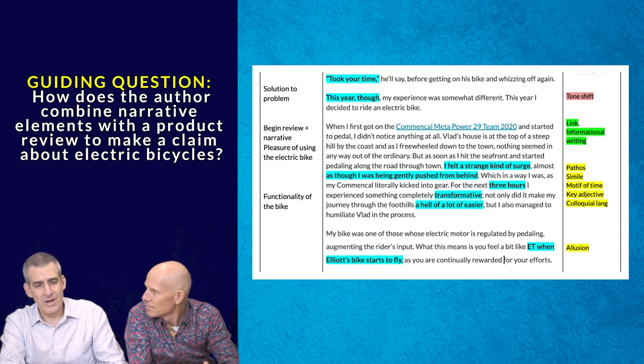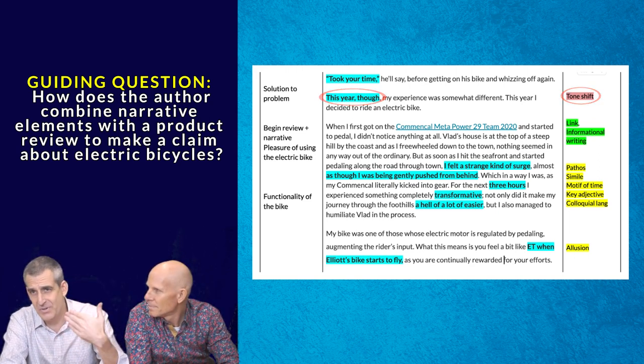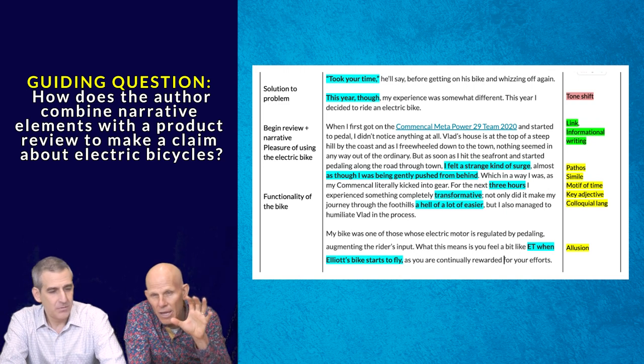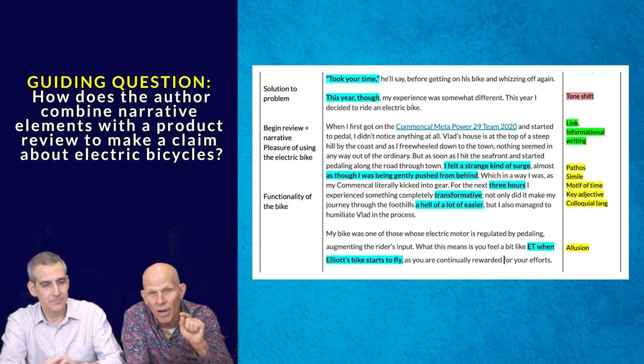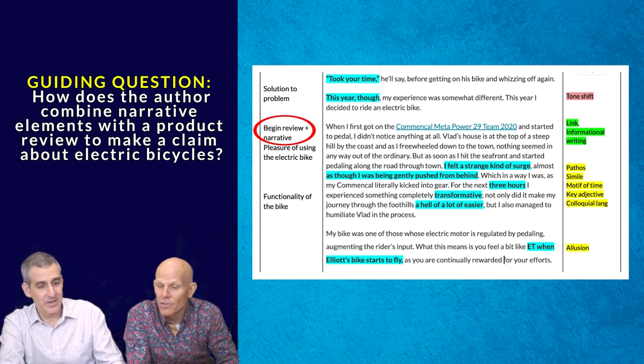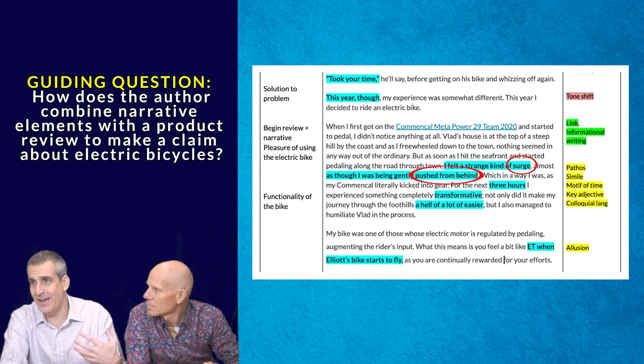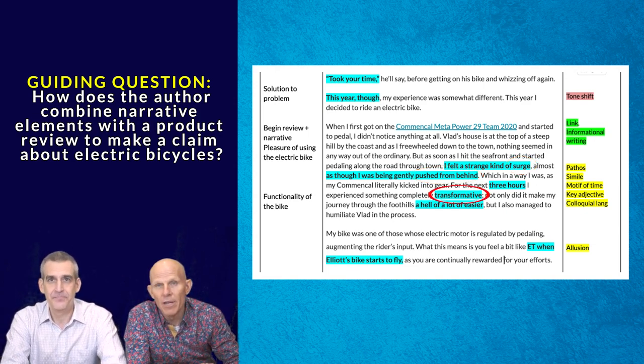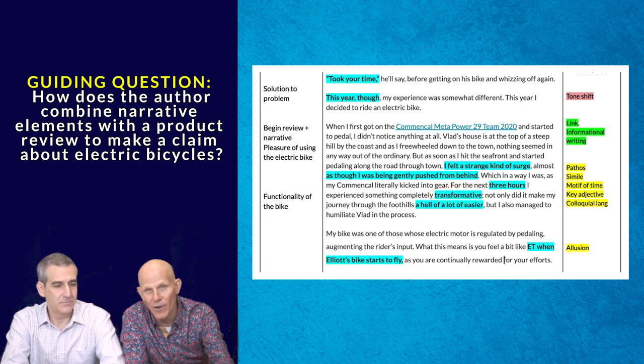I think the next part is really important. I always think students need to look for tone shifts, and this year, comma, though, comma. For me, that marker of though really is that transition that shows that the piece is going to go in a different direction. We need to look for those tone shifts. It's a narrative. We want to think about, he's told a story here, a small anecdote of him suffering and Vlad doing so well, and now we see the shift. Now we have a new narrative where he's now going to be talking about the product and how the Commencal Metapower 29 Team 2020 has allowed him to change. And how did he change? Well, we noticed that when he has this new product that he's reviewing, he felt this surge behind his back, like he was being pushed from behind. I think as readers, we feel energetic and we feel excited for him, like he can finally compete with Vlad. I think the word transformative, that's an adjective, and that is a powerful adjective to really show how this product has enabled this writer to transform himself.